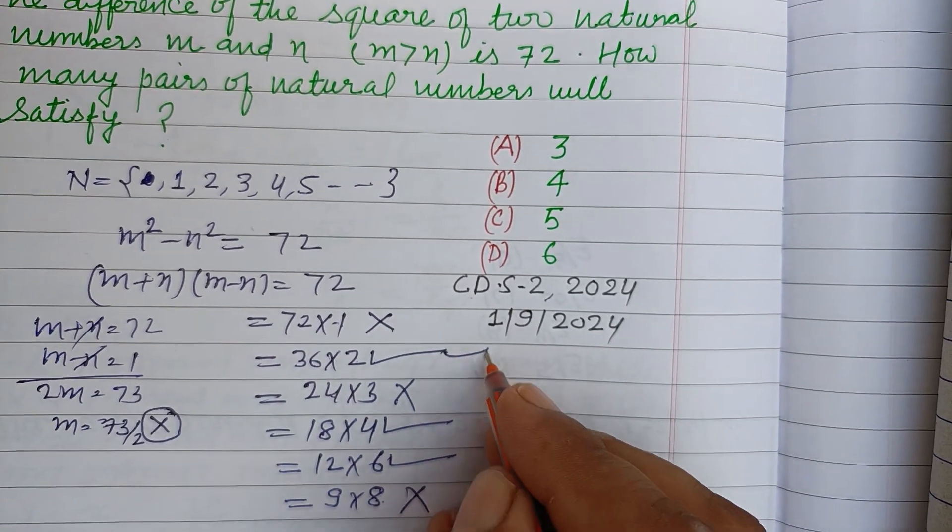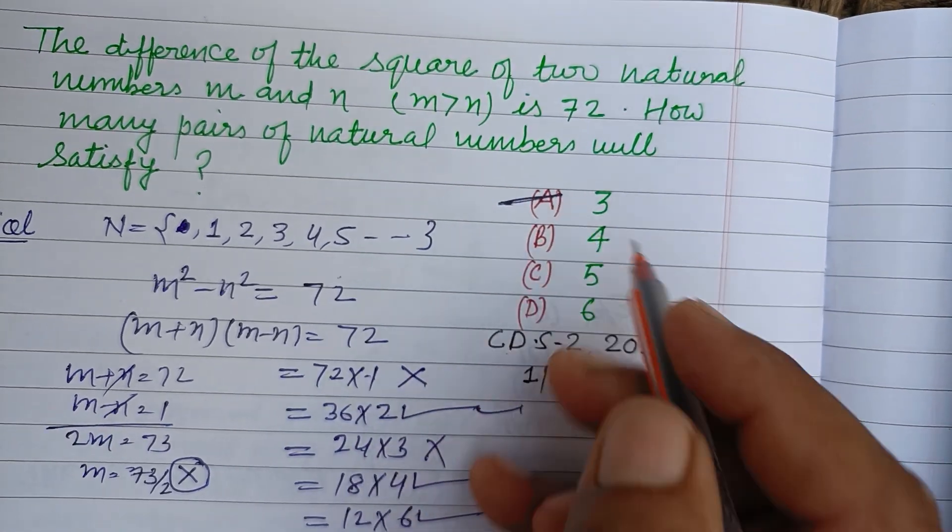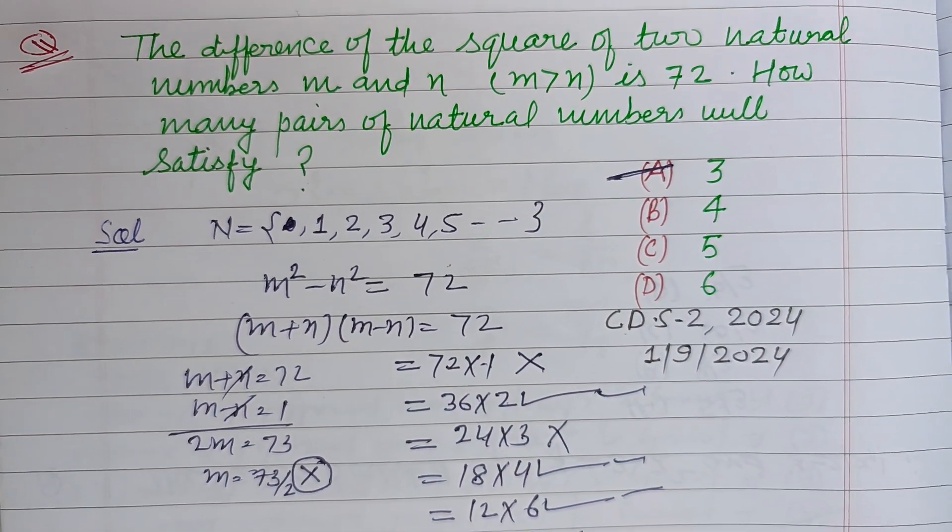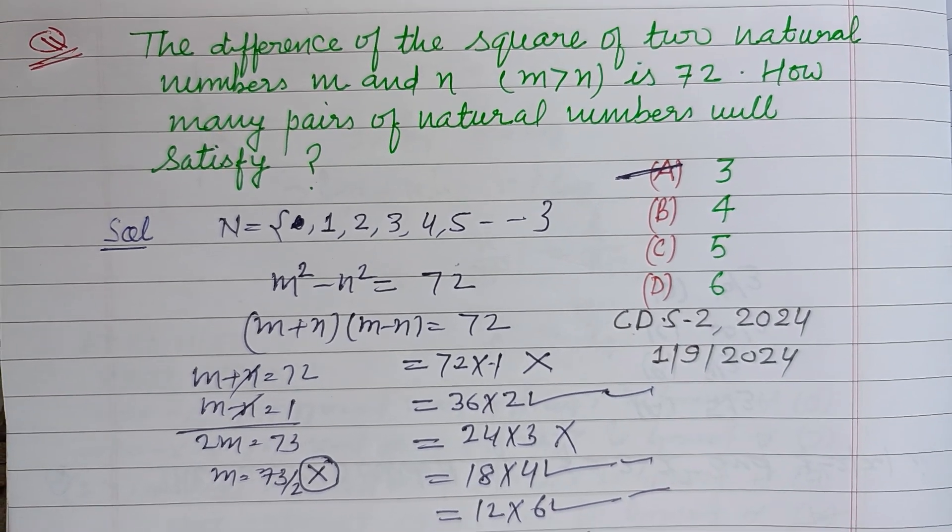Therefore, three pairs are possible: one, two, three pairs. So the answer is A of this question. I hope you got it. Please like the video, subscribe the channel. Thanks for watching.